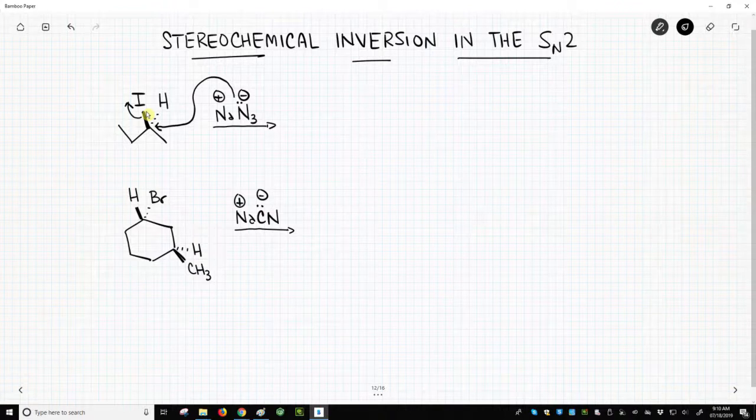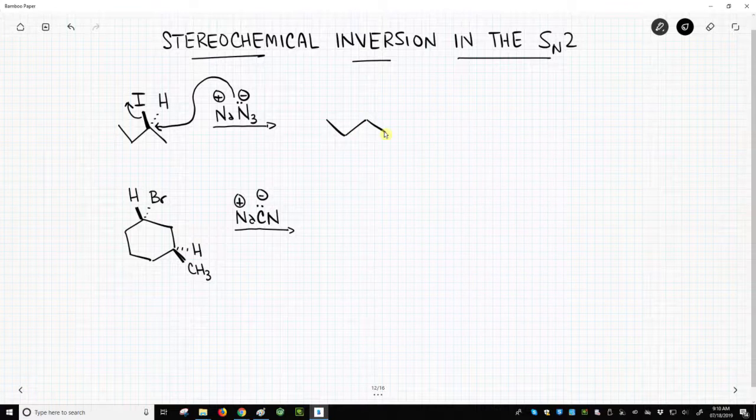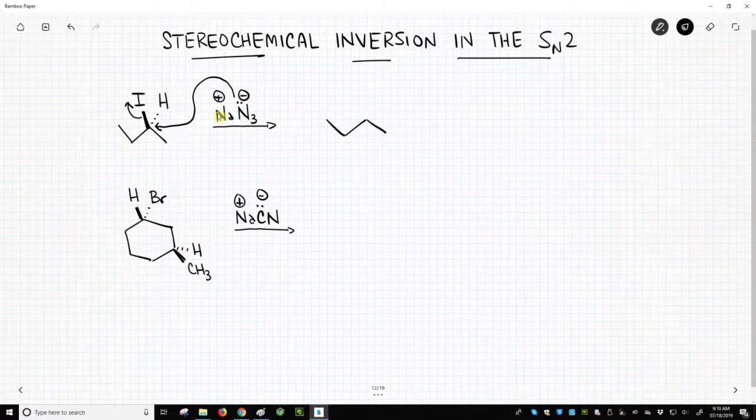Well, what happens is it changes the stereochemistry. So I'm going to draw the butyl chain in exactly the same way, but since the azide had to come in from the opposite face, in this case the back face,